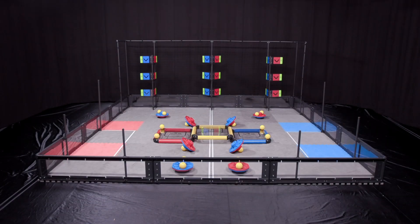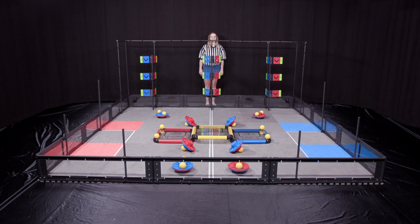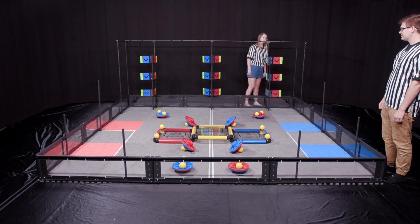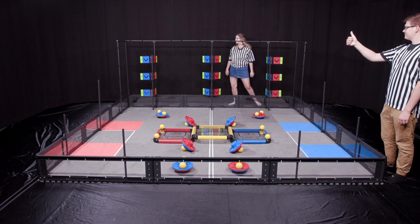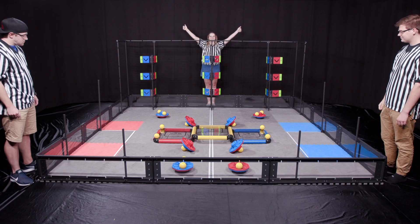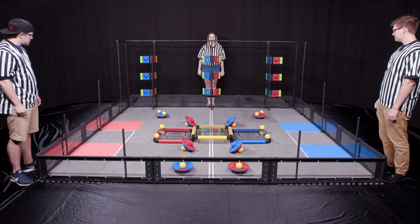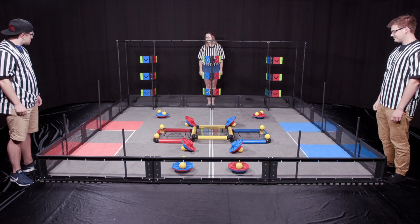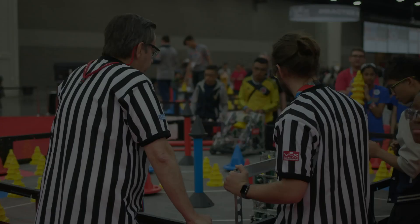Once the field is set, referees should take their position around the field. In the ideal situation, you would have three referees per match. The head referee should stand behind the net so that they can see the whole field, and the scorekeeping referees should be stationed at the two corners of the field such that they can see the flags and posts. The corner referees are especially important this year in case a cap falls out of the field.